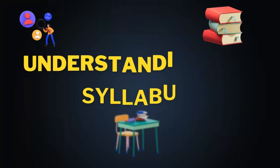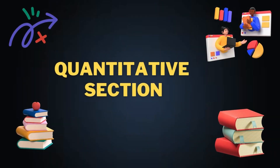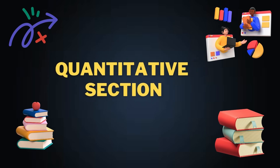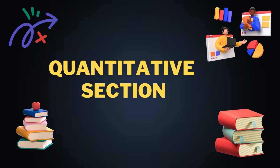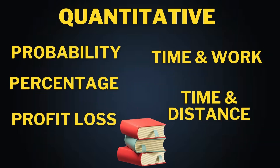Understanding the syllabus. First thing first — know what you are preparing for, whether it's campus placement or the financial banking sector. Aptitude is basically classified into three parts. The first part is quantitative analysis, which contains topics like probability, percentage, profit and loss, time and work, and time and distance. Quantitative analysis is more focused on mathematical skills.